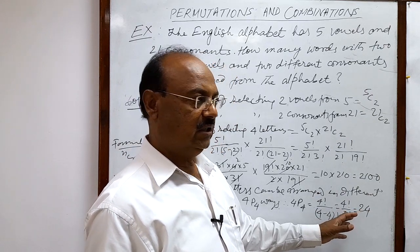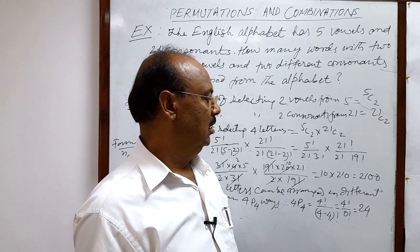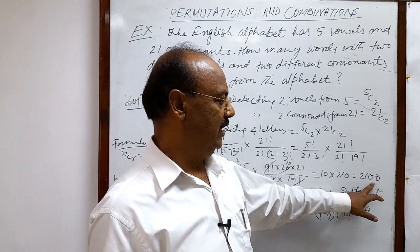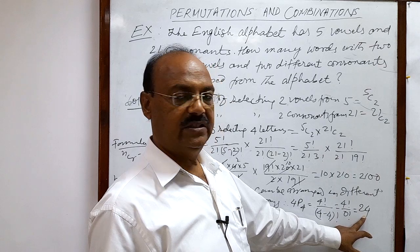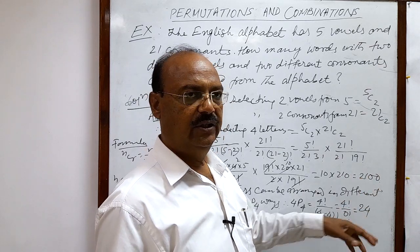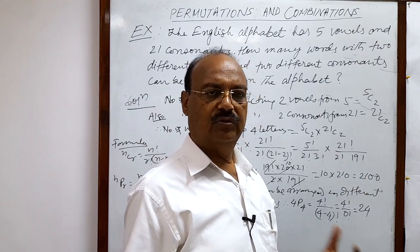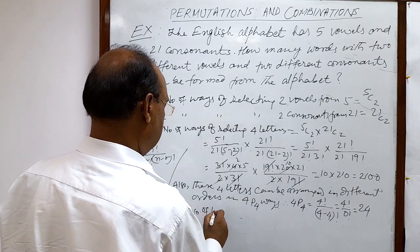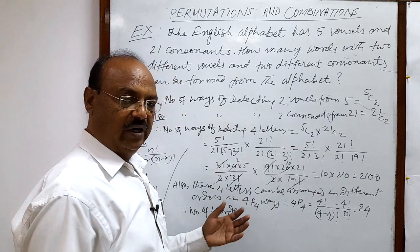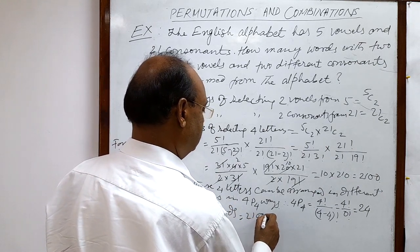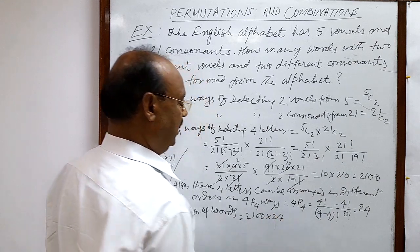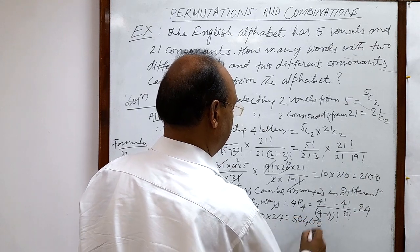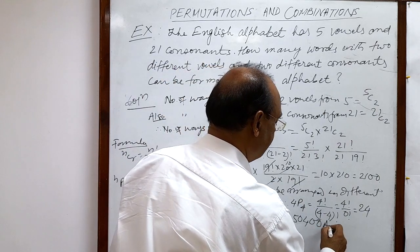This 24 is the arrangement for every single collection of letters. The total number of collections is 2100, and the total number of arrangements per collection is 24. Both are multiplied together to get all possible arrangements — that is, all possible words with or without meaning. Therefore, the number of words = 2100 × 24 = 50400. This is the answer.